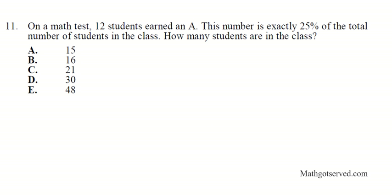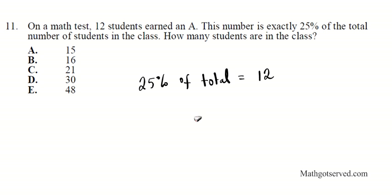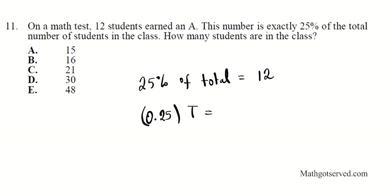Question number 11: on a math test, 12 students earned an A. This number is exactly 25% of students in the class. How many students are there in the class? Basically, 25% of the total equals 12. Let's write this in equation form: 25% is the same as 0.25, so 0.25 times t equals 12, where t is the total number of students.